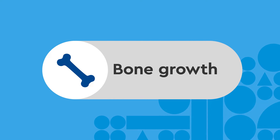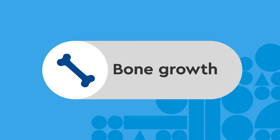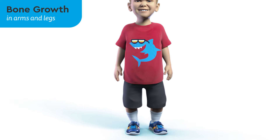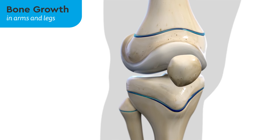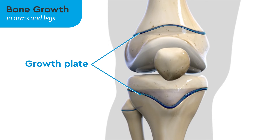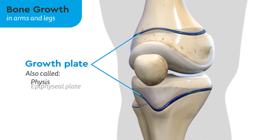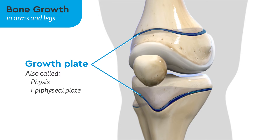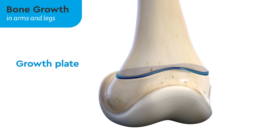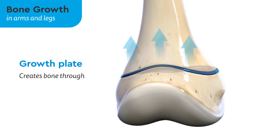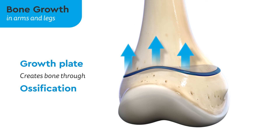To understand the effects of achondroplasia, let's review how our bones grow. The bones in our arms and legs grow from a special area called the growth plate, also called the physis or epiphyseal plate, which is made up of soft cartilage. As we grow, the growth plate slowly creates new hard bone through a process called ossification.